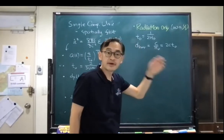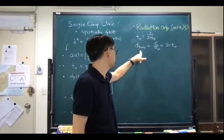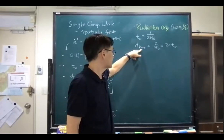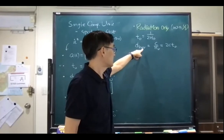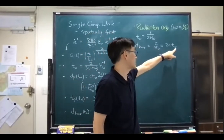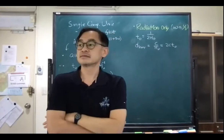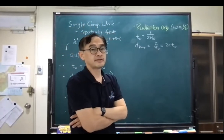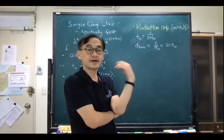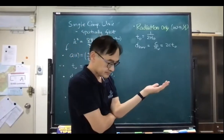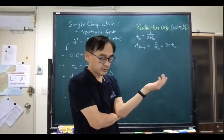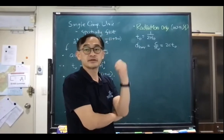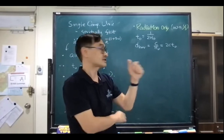So I'm going to make a similar argument in the case of the radiation-only universe. The horizon distance is now 2c t₀ — so it's twice the length of a static universe. For the matter-only universe it was three times c t₀, but in the case of radiation it got smaller.